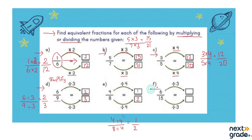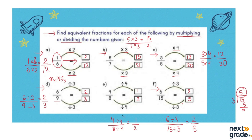Next, we are going to divide with the number 3. Let's divide 6 by 3, which gives 2. Then we divide the denominator: 15 divided by 3. Since 3 fives are 15, the answer is 5. So we write 2 over 5. That means the equivalent fraction of 6 over 15 is 2 over 5.